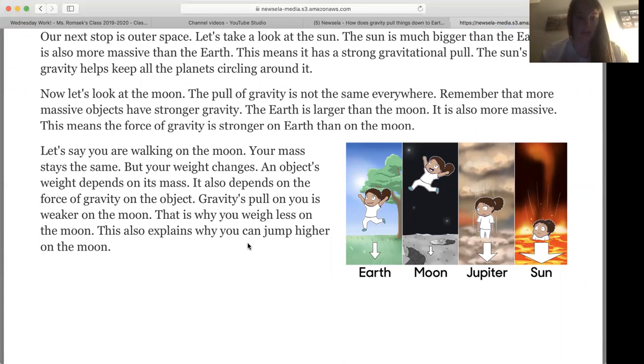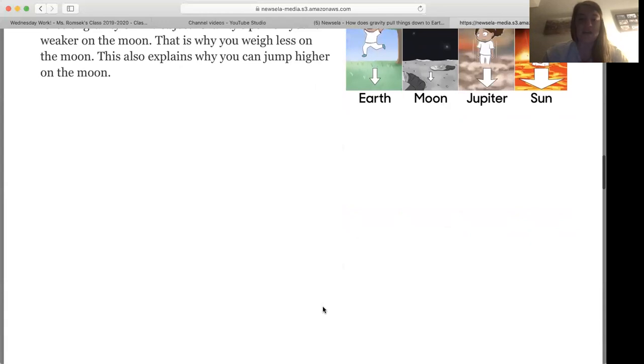Gravity's pull on you is weaker on the moon. That is why you weigh less on the moon. This also explains why you can jump higher on the moon. Okay, so if you look at this picture, on Earth this is just regularly how you jump because of how much gravitational pull we have. The moon, there's less, so you can jump higher. It's showing that Jupiter is more massive, it's bigger than the Earth. So if you tried to jump, you couldn't really go up at all because it has more of a gravitational pull on Jupiter than Earth does. Then if you look at the sun, it's so massive its gravitational pull is so large that it would just pull you right into the sun because it has that much gravity.